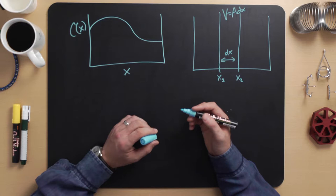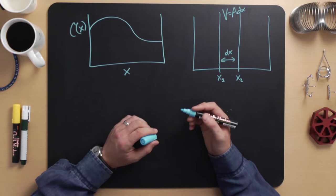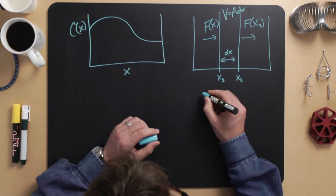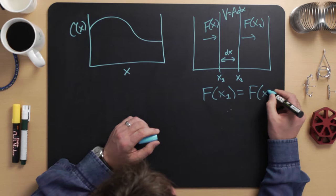Hence, conservation of mass implies that the flux f(x1) of the chemical into v at x1 must be the same as the flux f(x2) of the chemical out of v at x2. So if we have flux coming in f(x1), and flux coming out f(x2), we know that the flux at x1 must equal the flux at x2 because of conservation of mass. Now we ask the question: what drives the flux? What makes it be positive or negative?